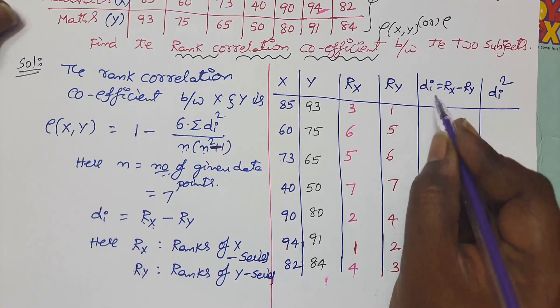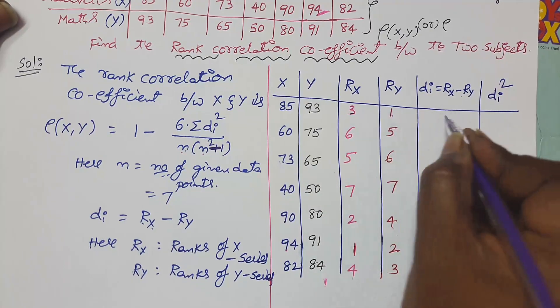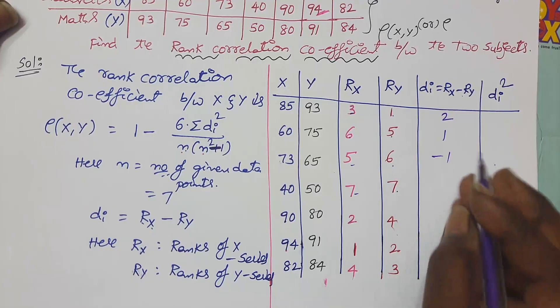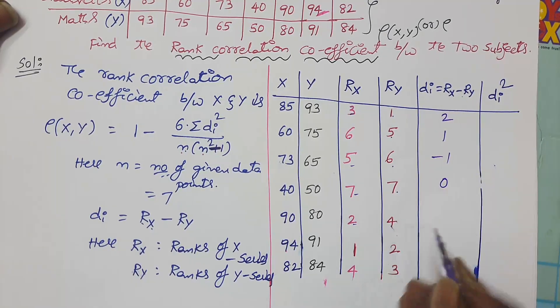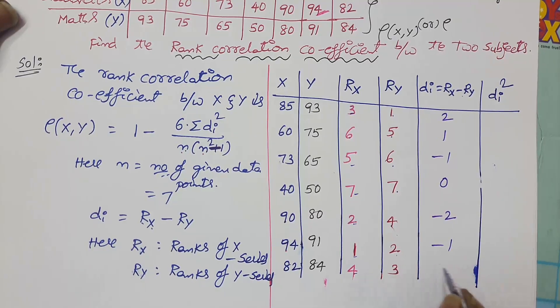Now write the differences between ranks, which is represented by di. 3 minus 1, 2. 6 minus 5, 1. 5 minus 6, minus 1. 7 minus 7, 0. 2 minus 4, minus 2. 1 minus 2, minus 1. 4 minus 3, 1.